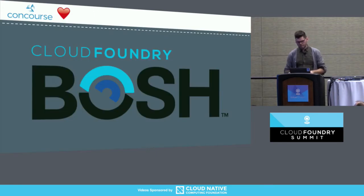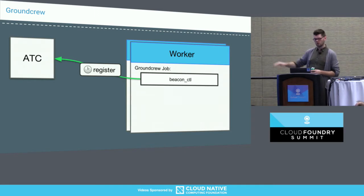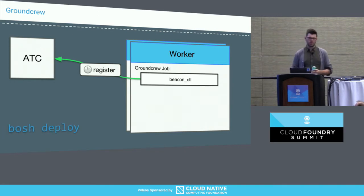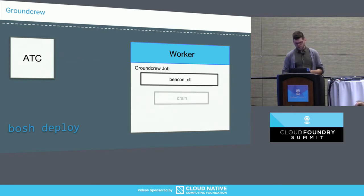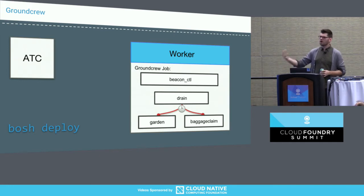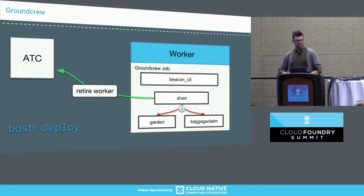We're also changing worker registration. Concourse really likes Bosh — it was our main way of talking about deploying Concourse in our documentation. We built a lot of good logic into the Bosh release, so there's this ground crew job that deals with registering Bosh-deployed Concourse workers. When a Bosh deploy scales down and removes a worker, that worker stops registering and starts draining — there's a drain script that looks at Garden and baggage claim and waits for running jobs to complete before safely retiring.